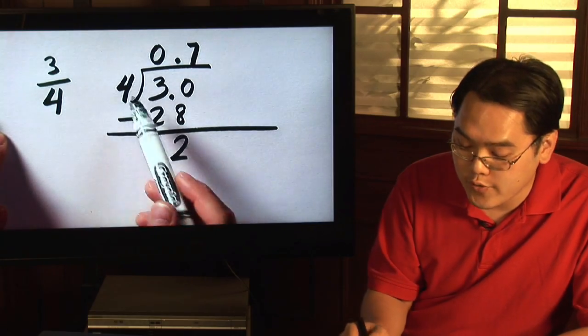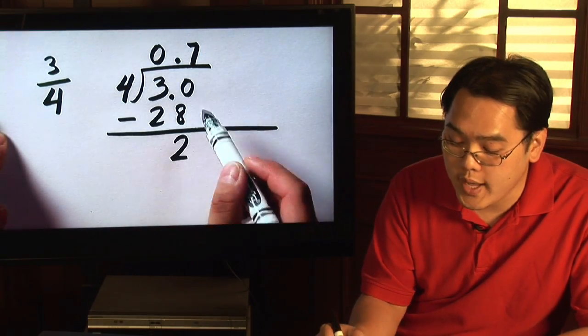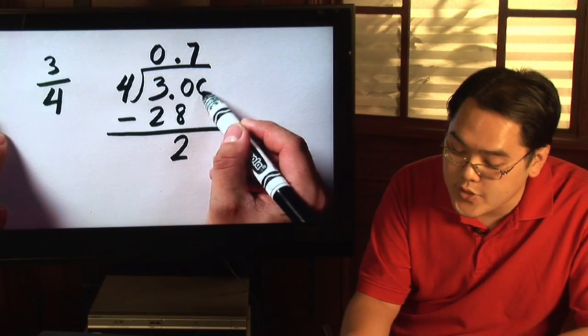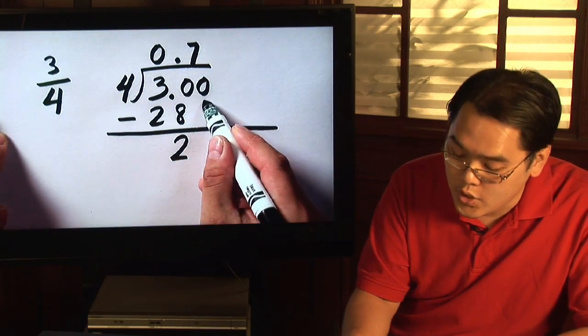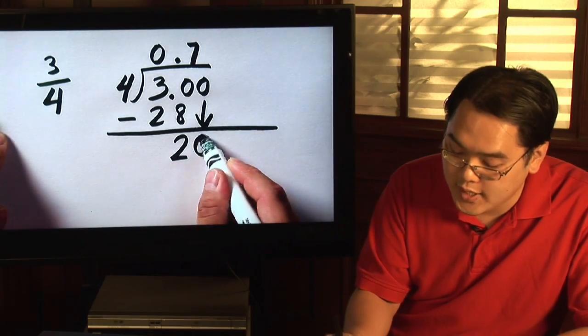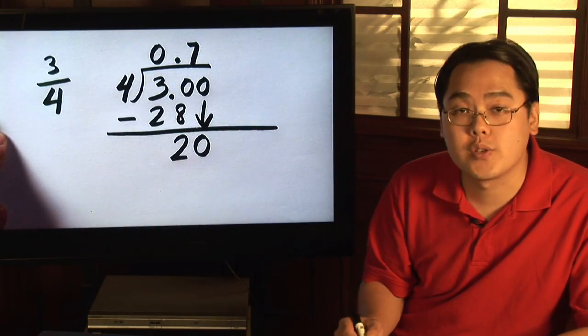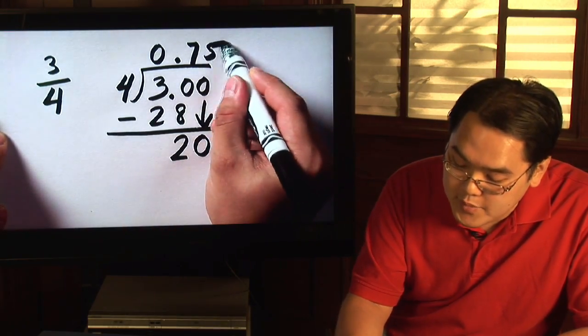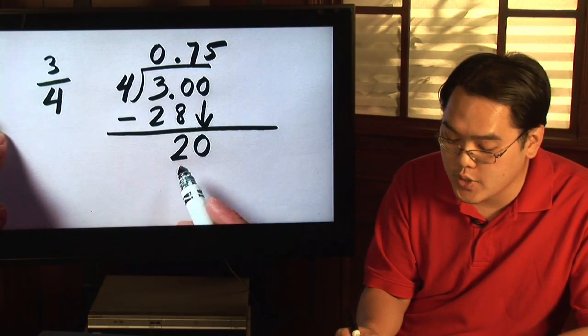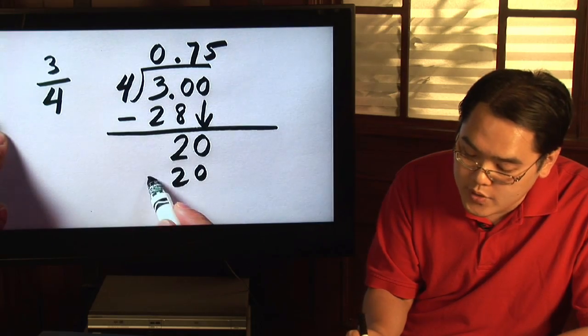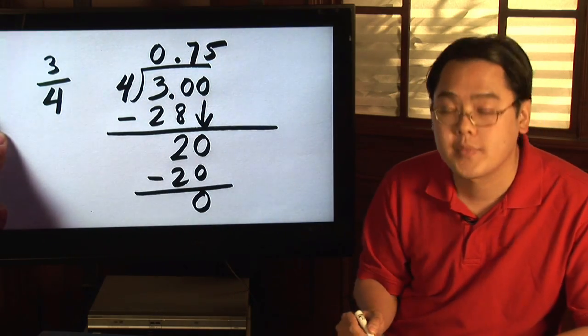Now you know 4 doesn't go into 2, so go ahead and add another zero to see if you're going to be able to have a number that will divide evenly. Now 4 goes into 20 five times, so 4 times 5 is going to give you 20. So you have 20 down there and when you do the subtraction it's going to be zero.